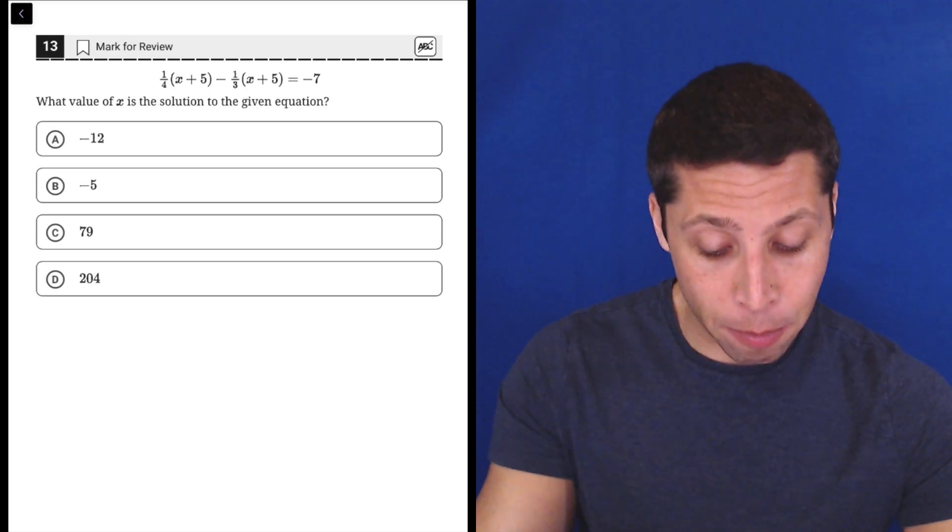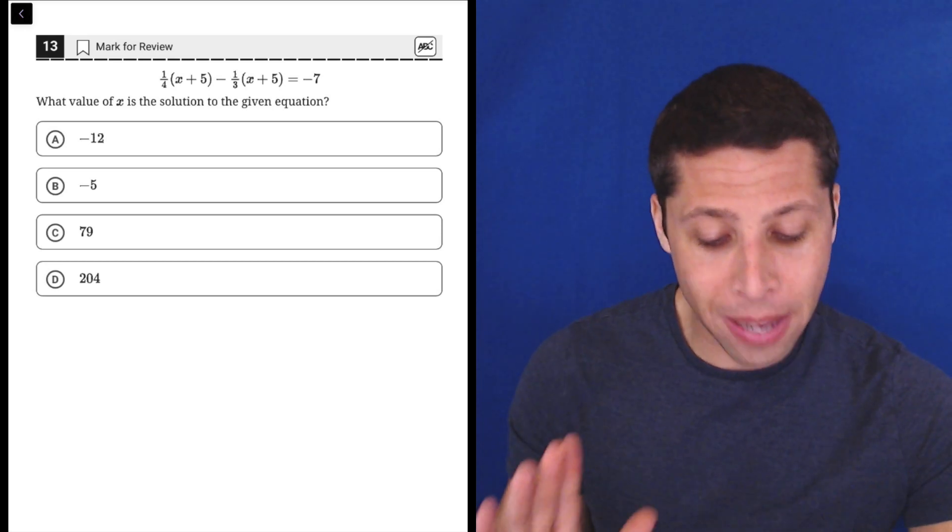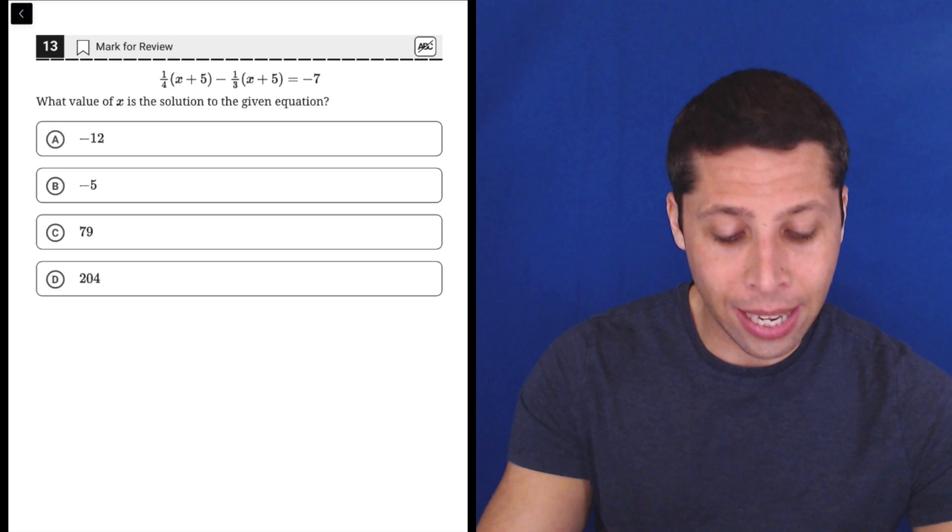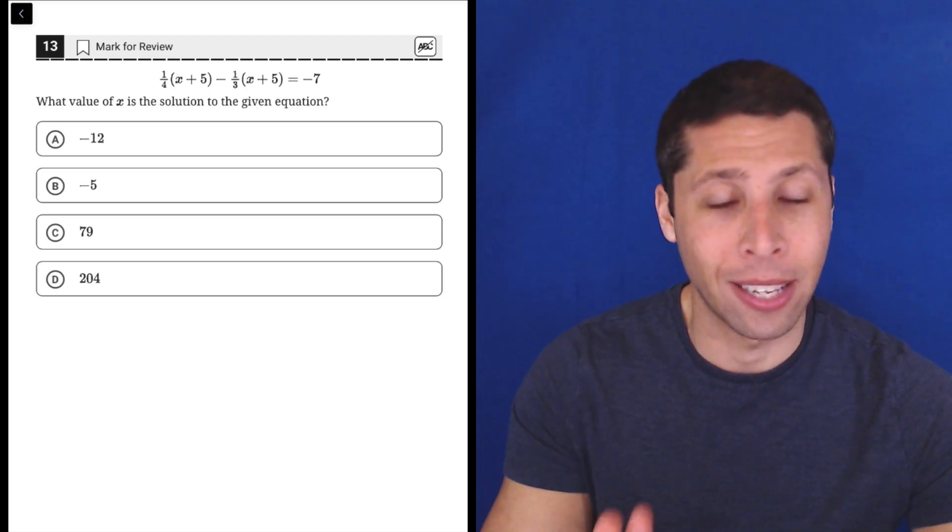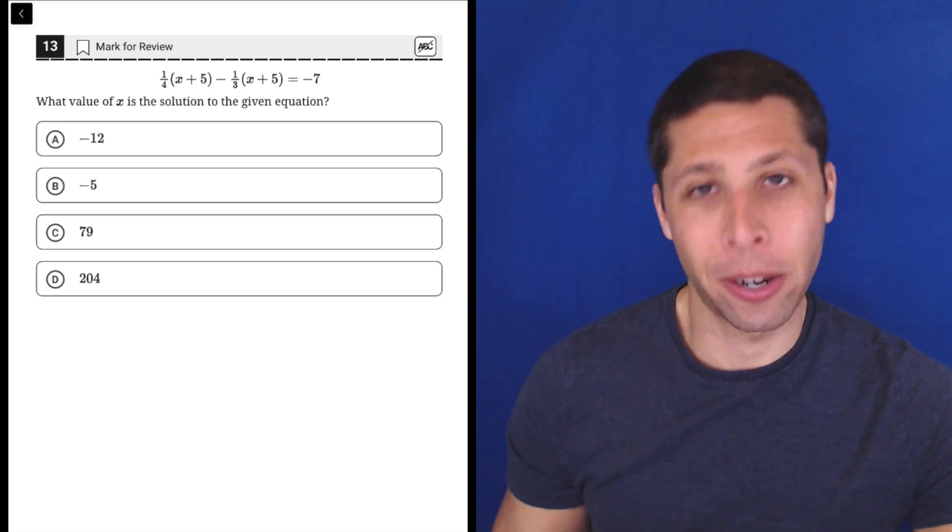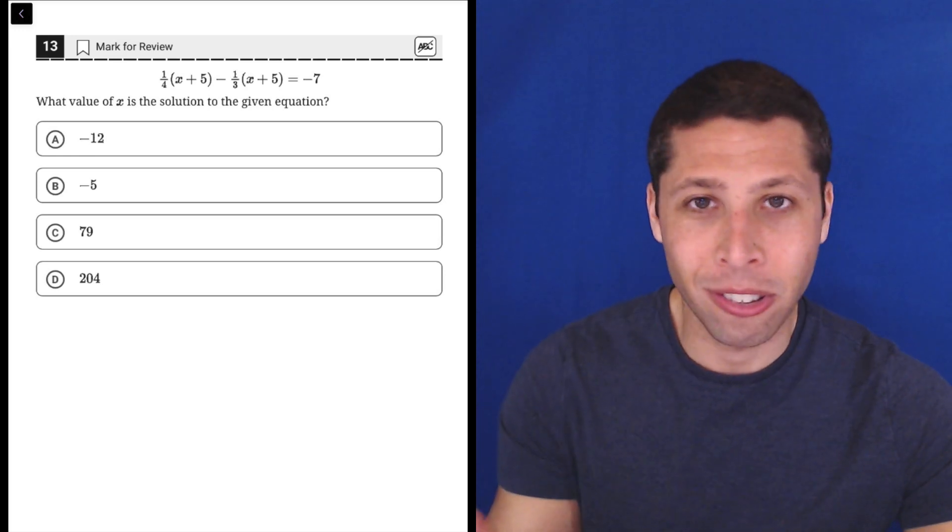We could guess and check, and that's actually not so bad because look at these answers for X. They're not messy numbers. We could plug them in and we could guess and check not in a terrible way. It's doable. But there's an even better way, which is to not do any math at all. Just let the calculator do it.